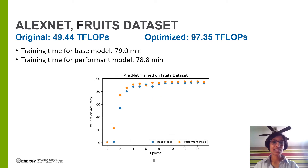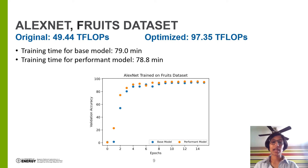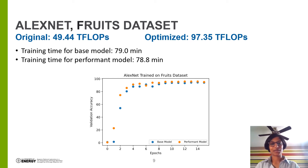This slide depicts AlexNet's performance over the Fruits dataset. Similar to the CIFAR-10 dataset classification task, the high-FLOPs model vastly outperforms the original model for inference without sacrificing accuracy during training. Once again, we achieve similar timing for training.